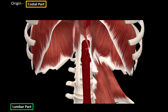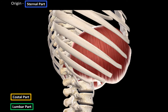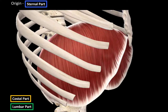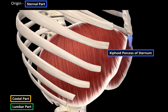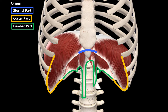The costal attachment originates at the inner surface of the twelfth to the seventh rib. Then, when it reaches the top side of the diaphragm, it originates behind the sternum as the sternal part — specifically from the posterior aspect of the xiphoid process of the sternum. So those are all the origin points of the diaphragm: the lumbar part, the costal part, and the sternal part.